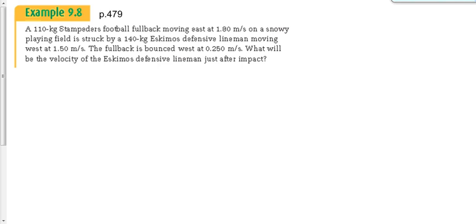Let's take a look at one more for the football players over there. Page 479, it says a 110 kilogram Stampeders football fullback moving east at 1.8 is struck by 140 kilogram Eskimos defensive lineman. 140 kilograms is literally twice my size. Defensive lineman moving west at 1.5 meters per second. We've got an east and west thing I probably want to draw attention to here. Even before we look at what's going on in the problem, I notice that, so I want to draw attention to it so I don't forget it later when I'm focusing on other things. The fullback bounces west at 0.25 meters per second. What's the velocity of the Eskimos defensive lineman just after impact?